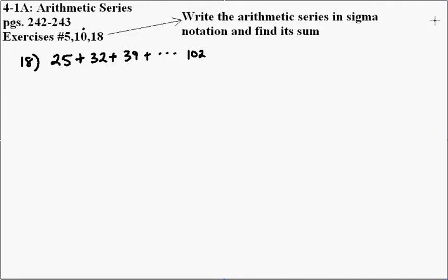We will begin by first finding its sum and then writing the series in sigma notation. As in previous problems, we need to first find out how many terms there are in this series. So we are going to start with the formula. The value of the nth term is equal to the value of the first term plus the number of terms minus 1 times the common difference.